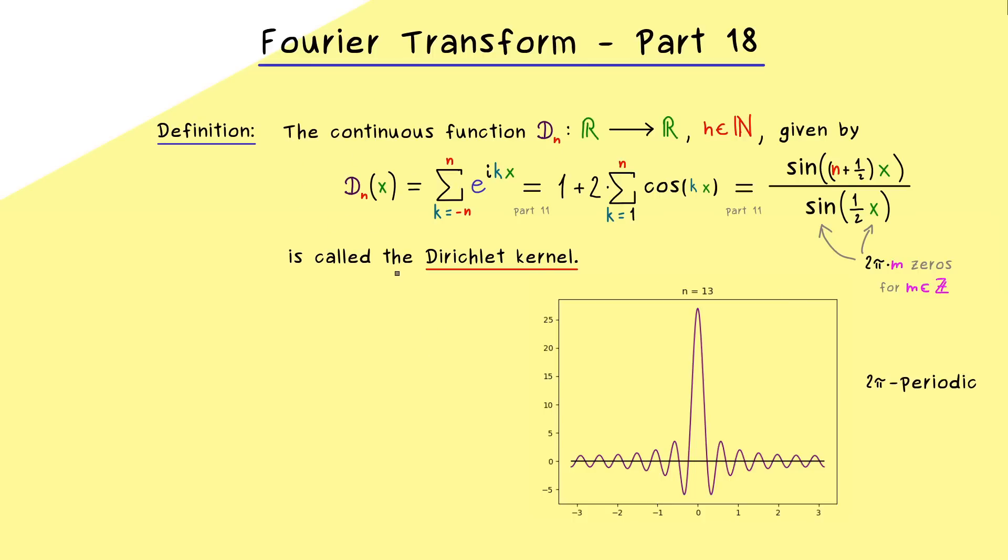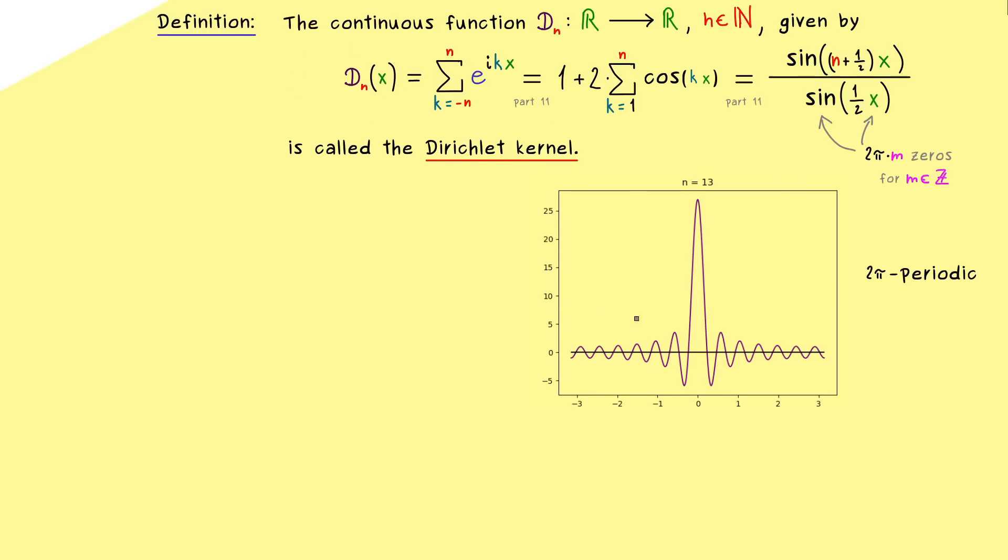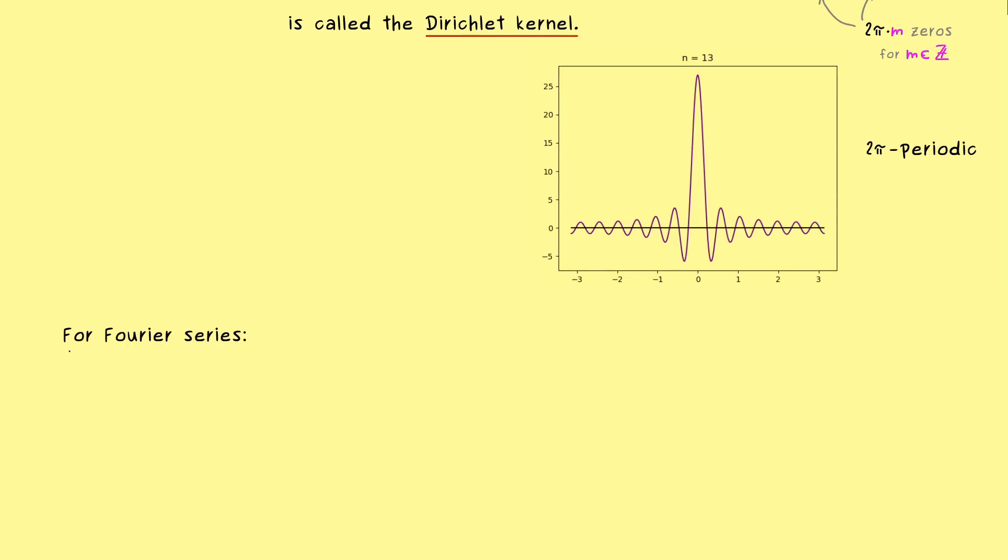But still, the whole Dirichlet kernel is very helpful for representing Fourier series. In fact, it gives us a very short formula to remember the whole Fourier series. This means for a fixed function f and a fixed natural number n, we can look at F_n(f) at a given point x in the real number line. Indeed, if we stop the Fourier series at a natural number n, we know we get out a continuous function.